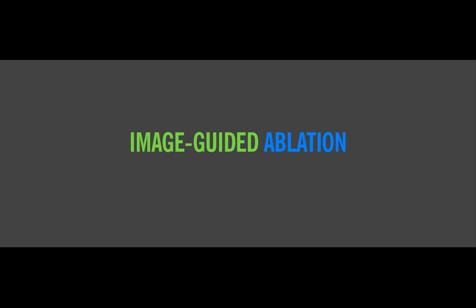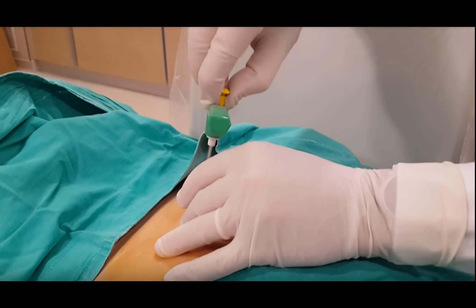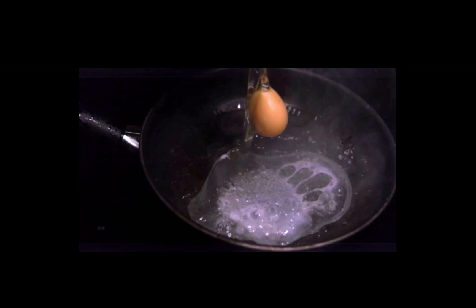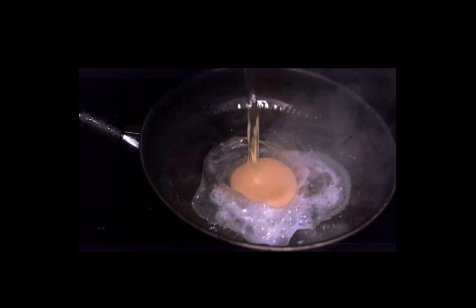Now let's talk about ablation. Ablation is different from TACE and Y90. TACE and Y90 are forms of trans-arterial therapy, meaning I have to catheterize the arteries of the liver to deliver the treatment. However, with ablation, we don't have to go through the blood vessels at all. Instead, we access the tumor percutaneously using a special needle called a probe. We position these needles under ultrasound or CT control. The needle tip has the ability to either get very hot or very cold in a very controlled manner — we are cooking the tumor from the inside out, where we can precisely define the treatment area.